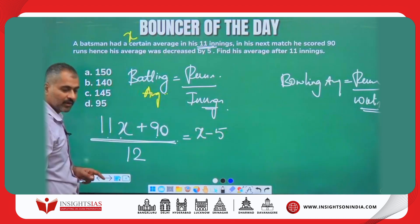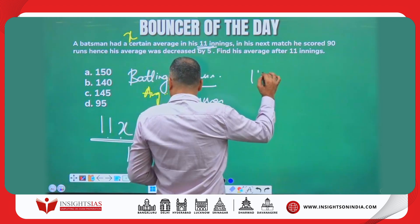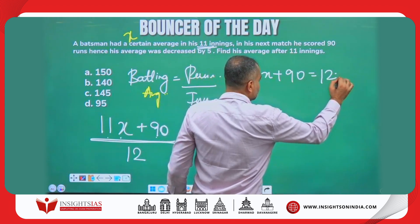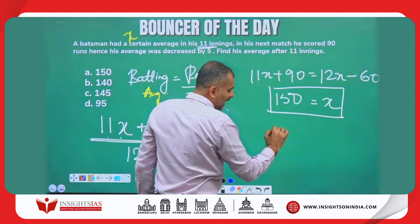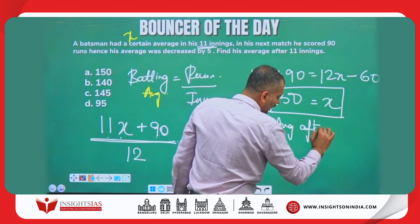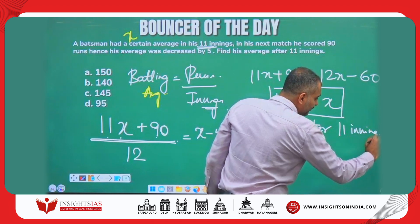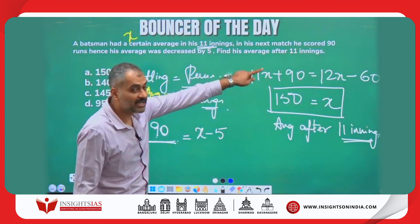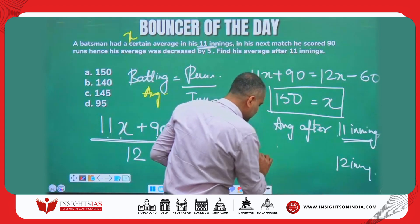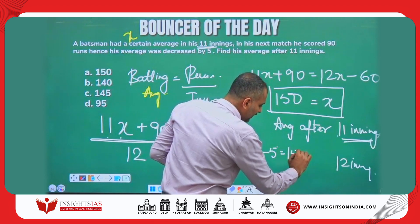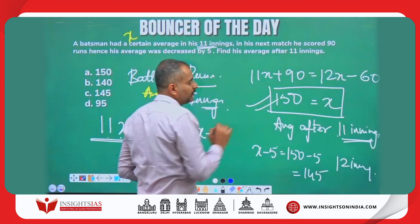Setting up the equation: (11x + 90) / 12 = x − 5, which gives 11x + 90 = 12x − 60, so x = 150. This was the average after 11 innings. If the average after 12 innings were asked, it would be x − 5 = 145.